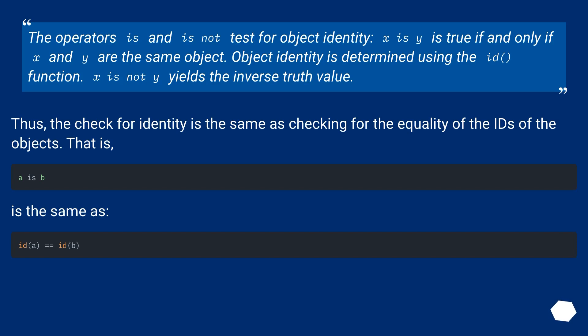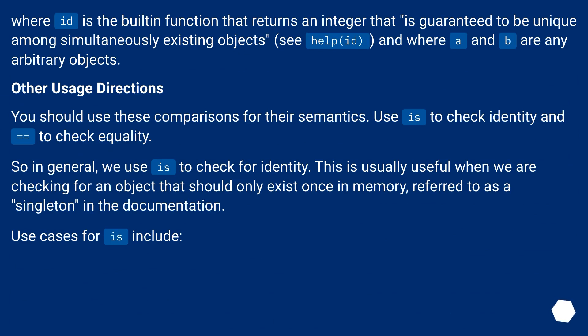Thus, the check for identity is the same as checking for the equality of the ids of the objects. That is, is the same as. Where id is the built-in function that returns an integer that is guaranteed to be unique among simultaneously existing objects, see help id, and where a and b are any arbitrary objects.